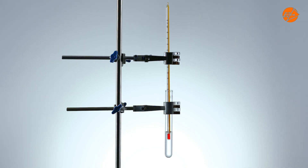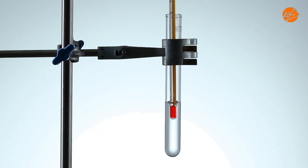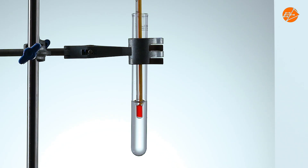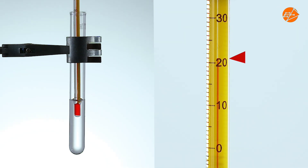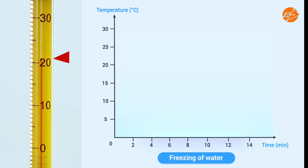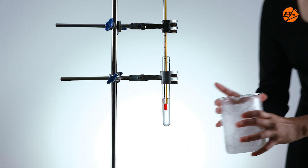This is the setup for freezing of water. Before freezing, the water is in its liquid state. Let's look closely at the thermometer — the temperature of the water is 21 degrees Celsius. Let's put this on a graph.